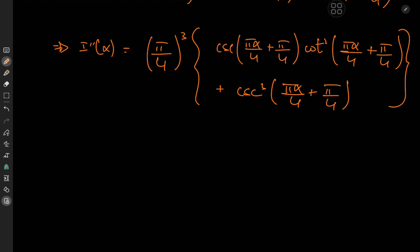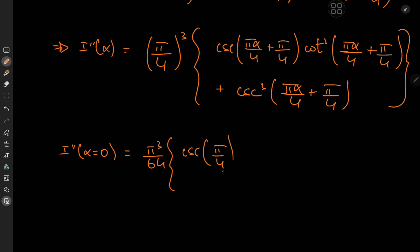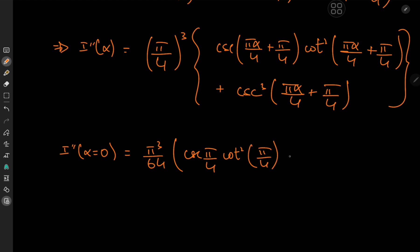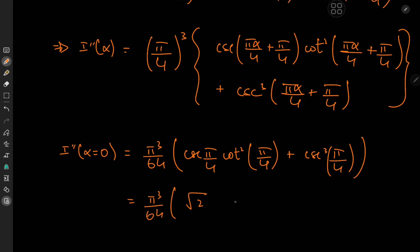Now we evaluate the second derivative at α = 0 and α = 2. For α = 0, we have (π³/64) times [cosecant(π/4) · cotangent²(π/4) + cosecant³(π/4)]. Cosecant(π/4) is the reciprocal of sin(π/4) = 1/√2, so cosecant(π/4) = √2, and cotangent(π/4) = 1. That gives us (π³/64) times [√2 · 1 + (√2)³] = (π³/64) times [√2 + 2√2].